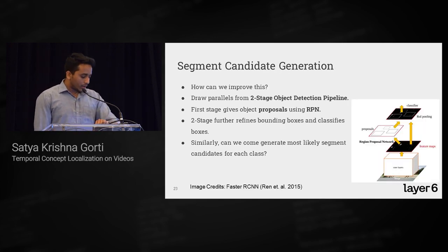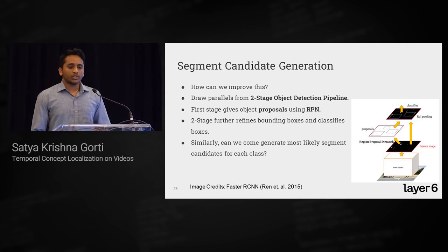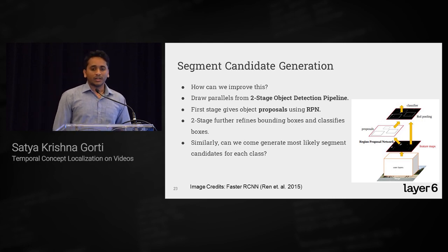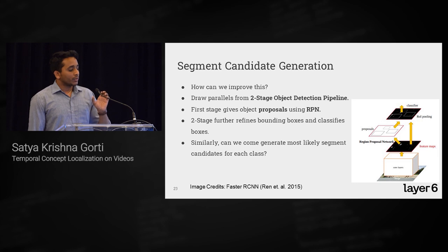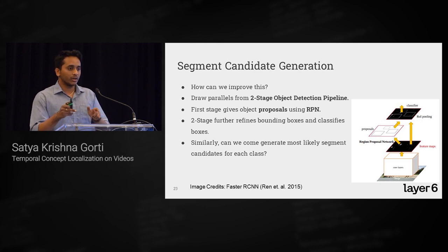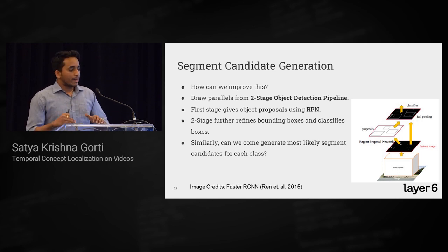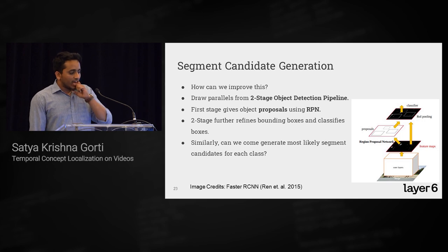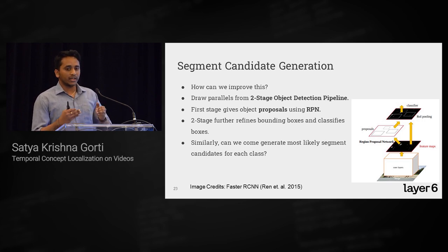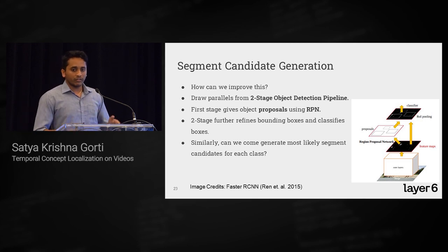Drawing parallels from a two-stage object detector like Faster-RCNN: the first stage is a region proposal layer that predicts bounding box proposals with high recall, and the second stage further refines these for higher precision. Can we do something similar for videos — a high-recall network finding the most likely candidates per class, with other models refining further?